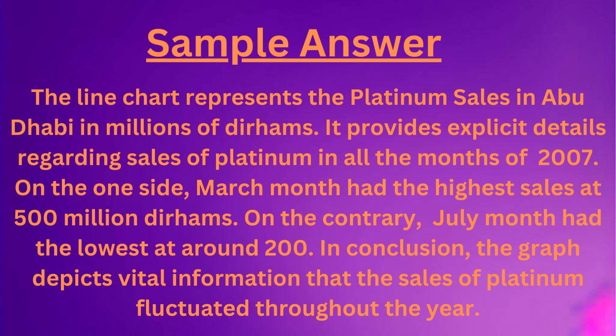March month had the highest sales at 500 million dirhams. On the contrary, July month had the lowest at around 200 million dirhams. In conclusion, the graph depicts vital information that the sales of platinum fluctuated throughout the year.